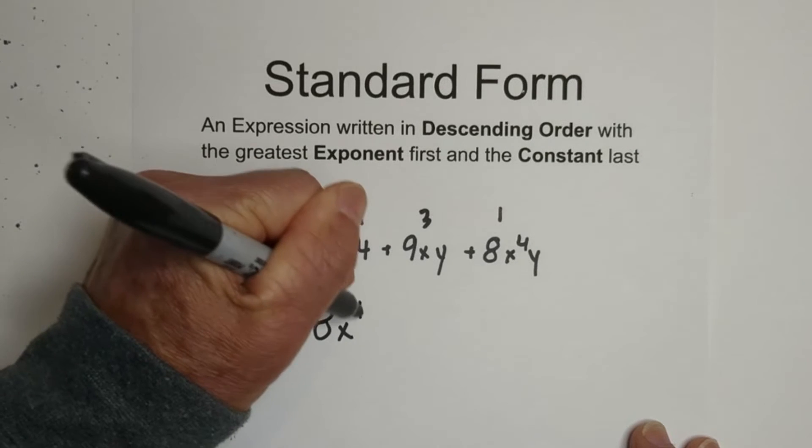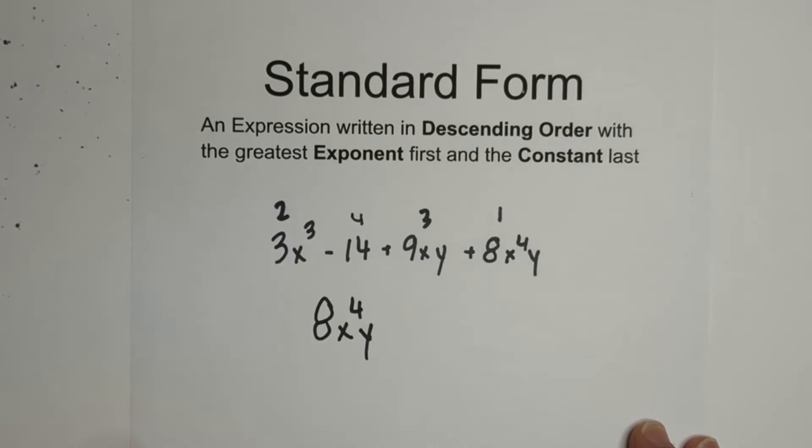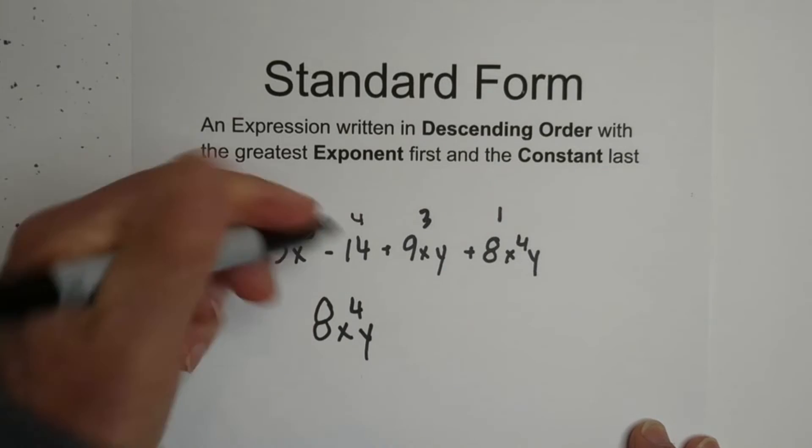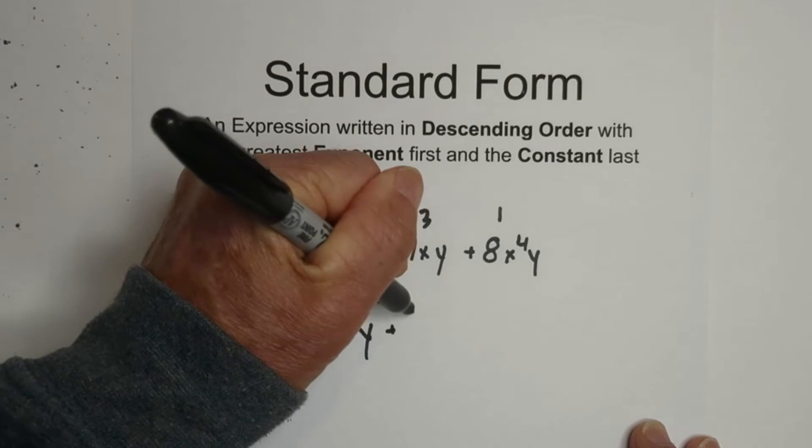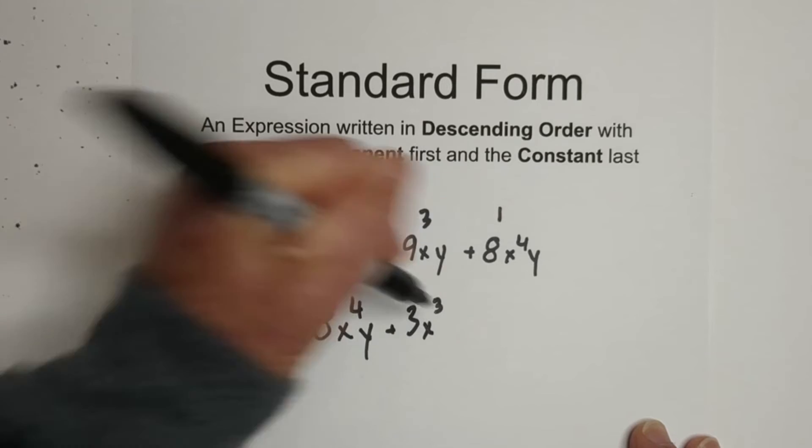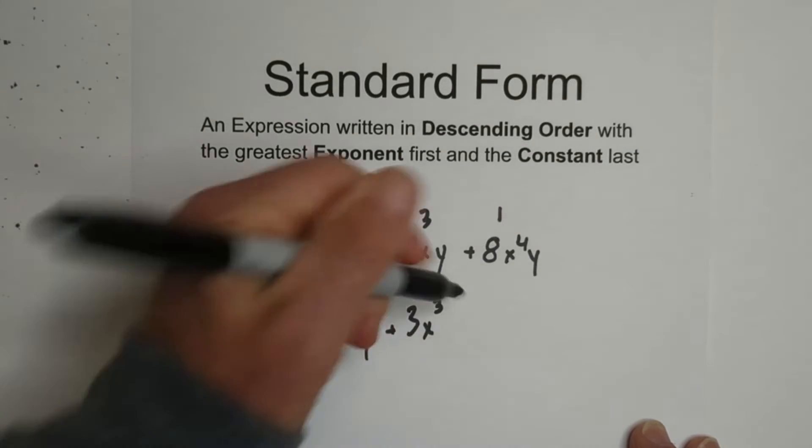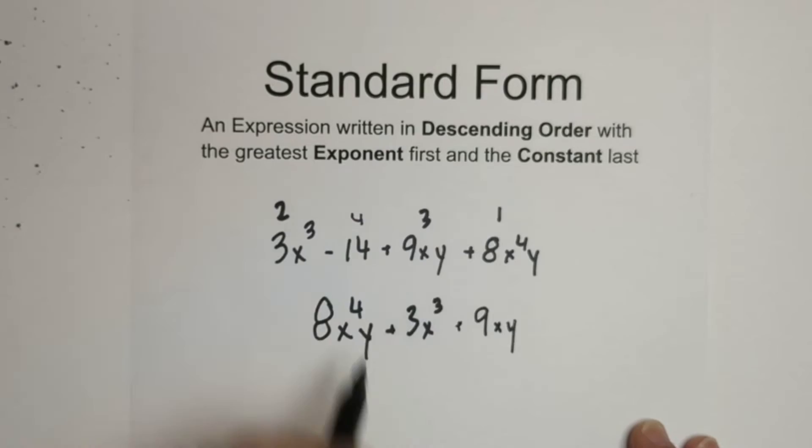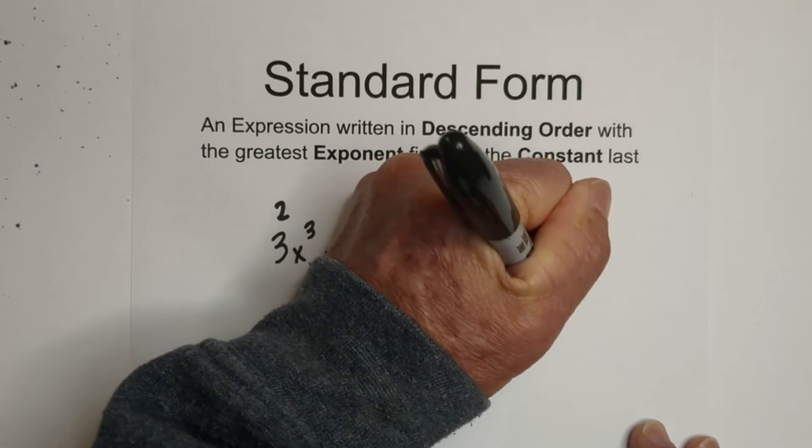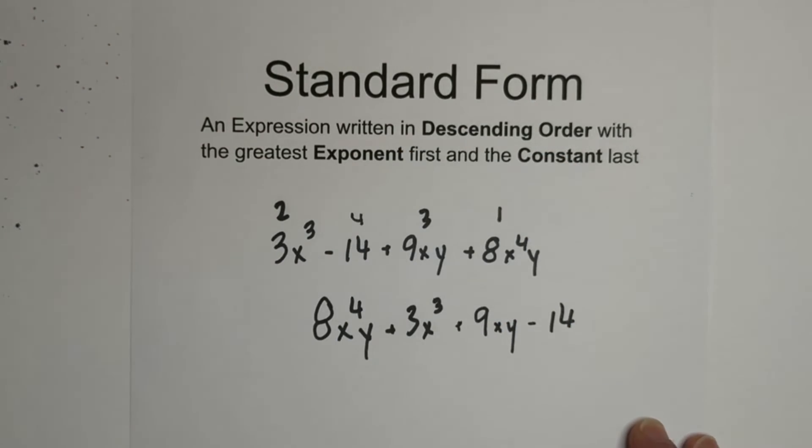Okay, so we have 8x to the fourth y, and then two is plus 3x cubed, and then it looks like we have a plus 9xy, and then we're going to go with minus 14.